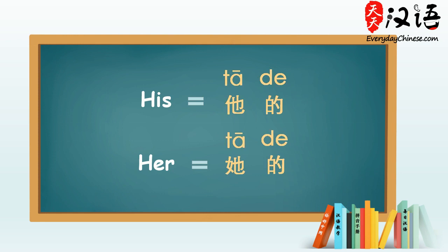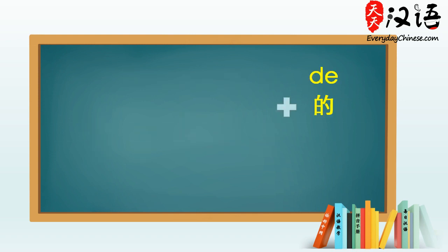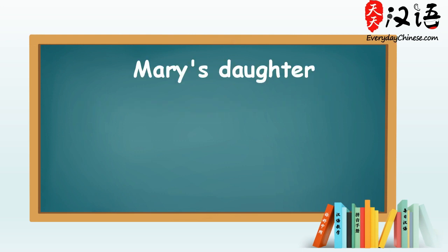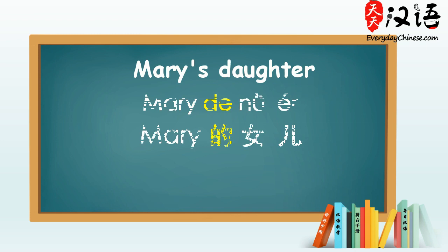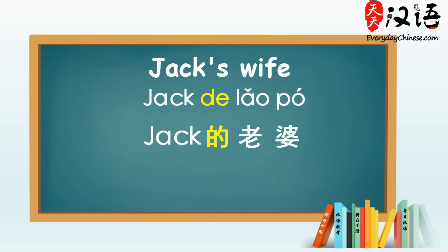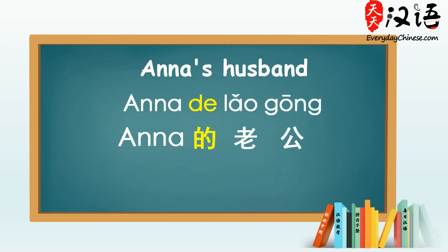This particle 的 not only can be used after a pronoun like 我, 你, or 她, it can also be used after any person, place, or object to express possession. For example, to say Mary's daughter, we say Mary 的女儿. Jack's wife is Jack 的老婆. Anna's husband is 安娜的老公.